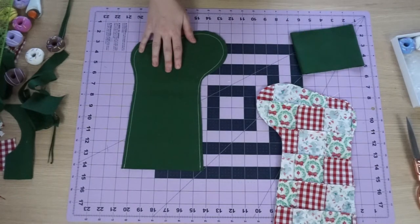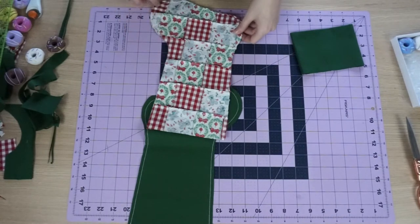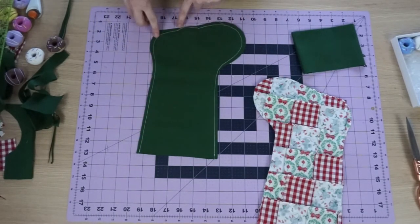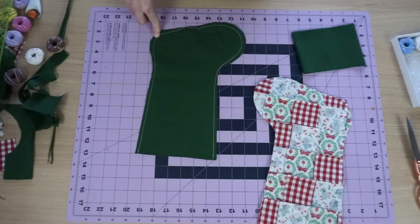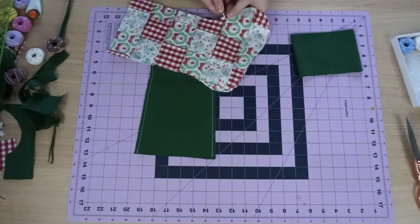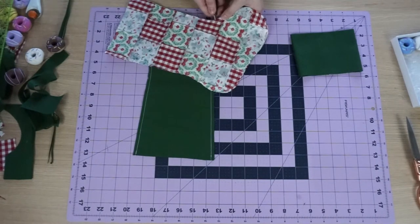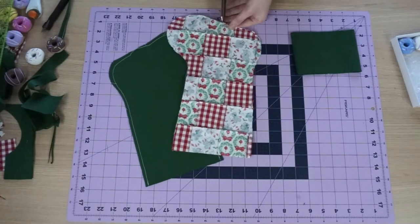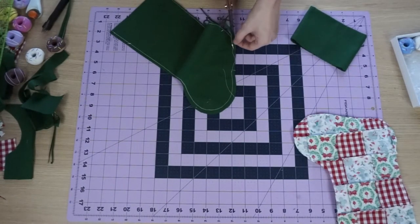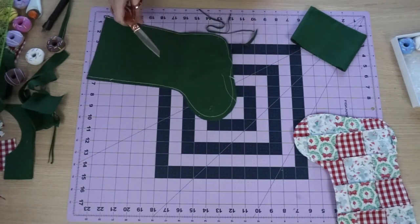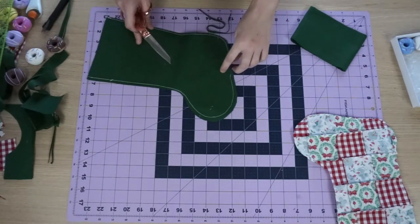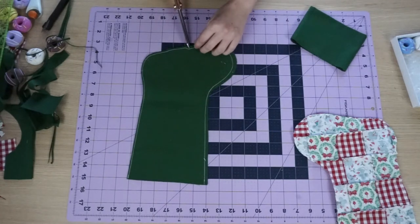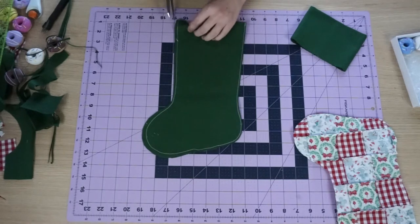So the next thing that you want to do once you have all these things sewn together is you're going to want to clip the curves of your stocking for both the main fabric and the lining fabric. And then you're also going to want to trim down your seam allowance of the lining fabric so that it fits nicely into the main fabric. And be careful when you guys are snipping into the curves because you don't want to accidentally cut your stitches. One tip I'm going to share with you guys is I personally don't like to trim all the way around. What I like to do is stop where the opening starts, and then clip it down, and then go back up and start where the opening ends.